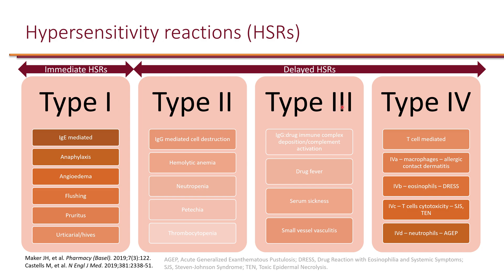Types 2 through 4 are delayed hypersensitivity reactions, occurring over hours, days, or weeks. Type 2 is IgG-mediated cell destruction, manifesting as hemolytic anemia, neutropenia, petechia, and thrombocytopenia. Type 3 is IgG-mediated immune complex deposition and complement activation, manifesting as drug fever, serum sickness, and small vessel vasculitis.